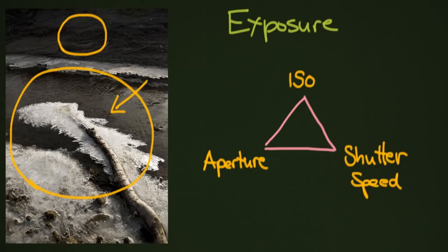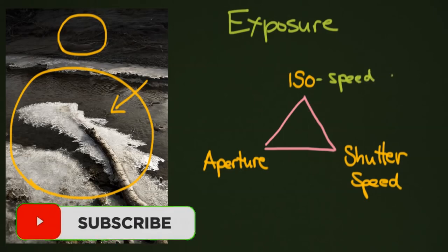So your ISO is the speed of your film. It's not sped, it's speed with two E's. The speed of your film or your sensor.